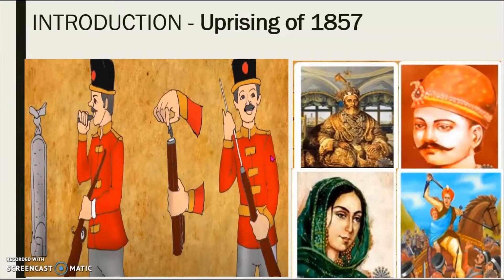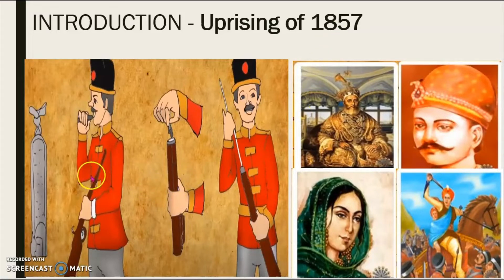Firstly, let us look at the introduction — the uprising of 1857. In chapter 4, that is the freedom struggle of 1857, we studied about different causes and movements by many leaders that led to the uprising of 1857, that is the Sepoy Mutiny. I hope you remember that.